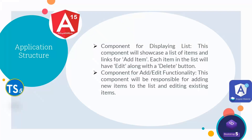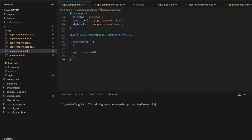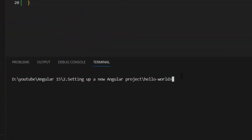Let's see our application structure. First is a component for displaying a list — this component will showcase a list of items and links for adding an item. Each item in the list will have an edit along with a delete button. Second is a component for add/edit functionality, responsible for adding new items and editing existing items. So we need two components: one for listing and delete, and one for add and editing.